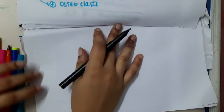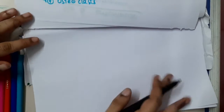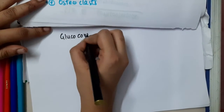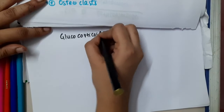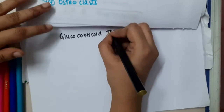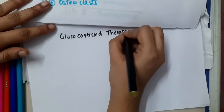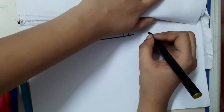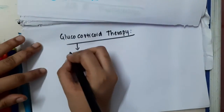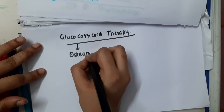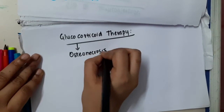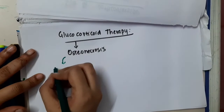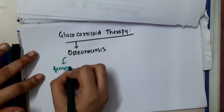Hello friends, let us now learn about glucocorticoid therapy effects on bones. Obviously osteoporosis, but there is one more disorder which can occur, which is osteonecrosis. Glucocorticoid therapy will result in osteonecrosis of the femoral head most commonly.